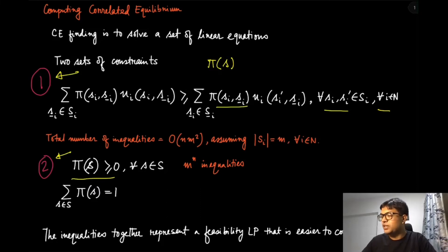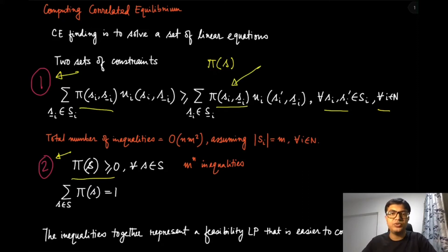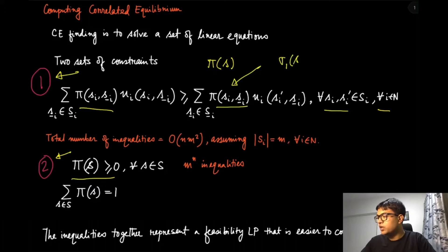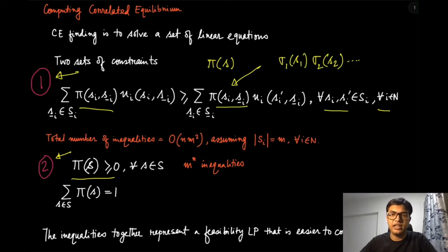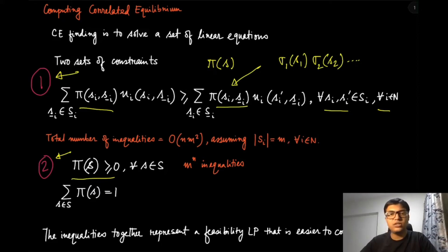Contrast this with the similar expression for mixed strategy Nash equilibrium, where we had sigma_1(s_1) multiplied by sigma_2(s_2) and so on. That gives rise to a product form of variables, which is a nonlinear optimization problem and not easy to solve. Here, all the inequalities are actually linear inequalities, which makes the problem of finding a correlated equilibrium a linear program.